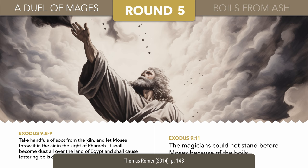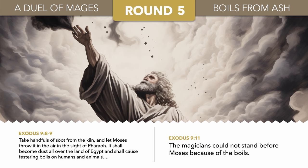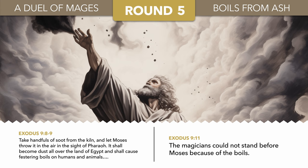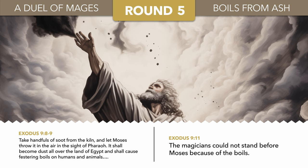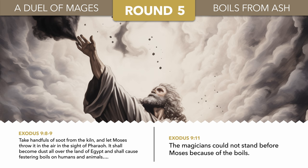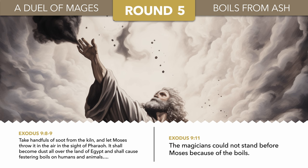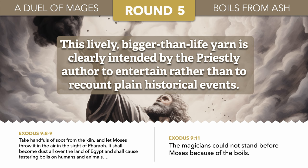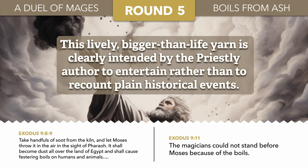Lastly, Aaron takes a handful of soot from a kiln and gives it to Moses, who throws it into the air. The cloud of soot immediately covers the entire land of Egypt, inflicting boils on people and animals. The magicians also suffer from the boils, and their condition makes them unable to attempt the same miracle. Again, we have the strange exaggeration of a handful of ash somehow blanketing all of Egypt, just as Aaron was able to wave his staff over all the rivers and ponds of Egypt. This lively, bigger-than-life yarn is clearly intended by the Priestly author to entertain, rather than to recount plain historical events.